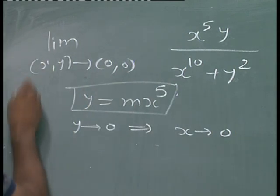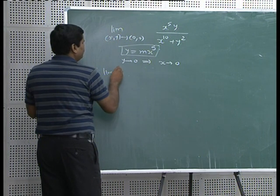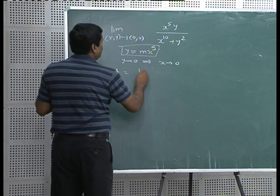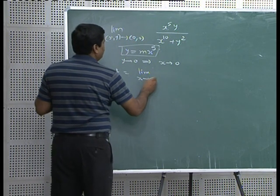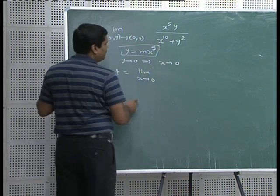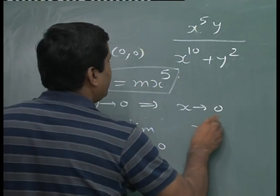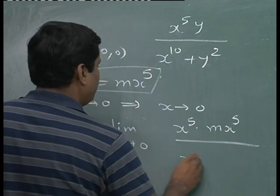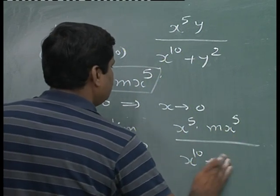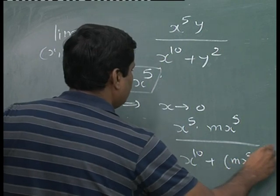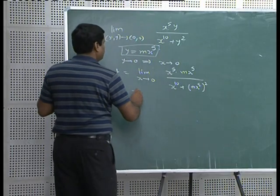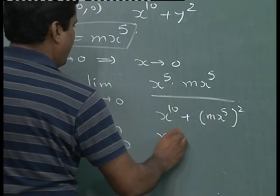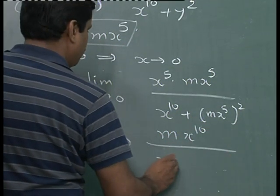Substituting y = mx⁵ into x⁵y/(x¹⁰+y²): as y→0, x→0. The limit becomes limit x→0 of x⁵·(mx⁵) / (x¹⁰ + (mx⁵)²) = limit x→0 of mx¹⁰ / (x¹⁰ + m²x¹⁰) = limit x→0 of mx¹⁰ / x¹⁰(1+m²) = m/(1+m²), which depends on m.